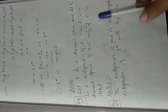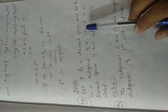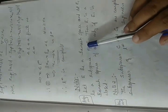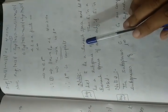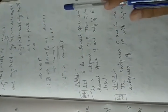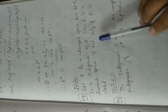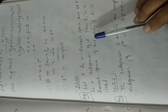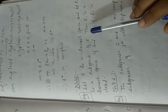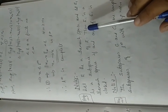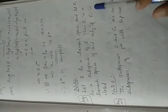We know that a complete normed linear space is called a Banach space. So we have proved that C[a,b] with respect to the supremum norm is a Banach space, and Lp for 1 ≤ p < ∞ is a Banach space with respect to the p-norm, and the space L∞ with respect to the supremum norm is also a Banach space.